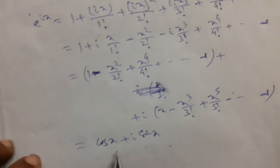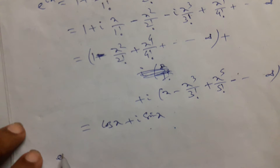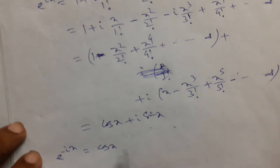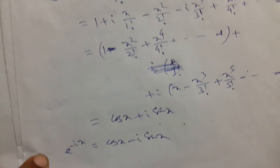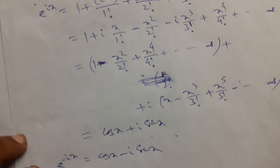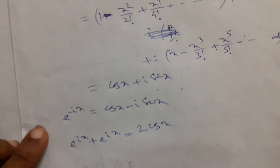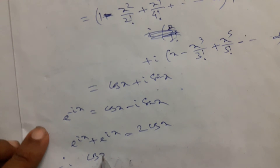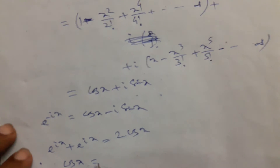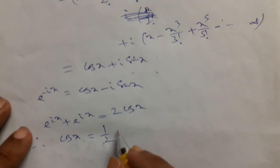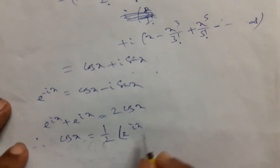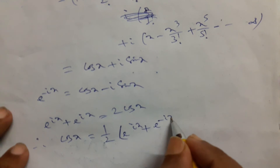Now we derive another result. If we replace x by minus x, we get e to the power minus ix equals cos x minus i sin x. Adding these two results, e to the power ix plus e to the power minus ix equals 2 cos x, so cos x equals one half of e to the power ix plus e to the power minus ix.